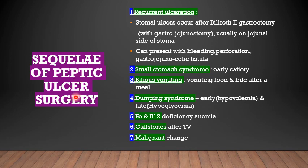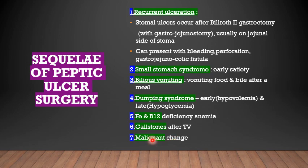The complications of peptic ulcer surgery include a long list, among which the most common is recurrent ulceration — ulcers usually occurring in the stoma of the Billroth II gastrectomy, presenting with bleeding, perforation and gastrocolic fistula. Other complications include small stomach syndrome, bilious vomiting and dumping syndrome, iron and B12 deficiency anemia, gallstones after truncal vagotomy, and malignant change in the gastric remnant.